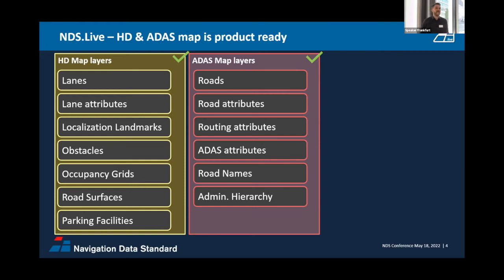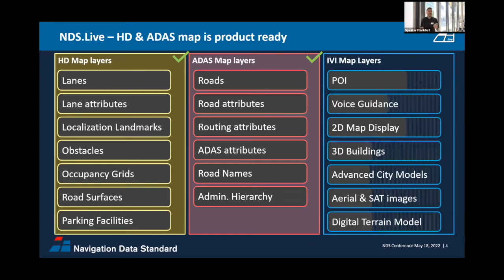We still have some open positions, namely the IVI map layers, because when we developed NDS Live we initially focused on HD map and ADAS map — those were the use cases where people needed the streaming format most. NDS Classic is still good and out on the street; you can even start a project with it right now. The IVI layers will be refactored to fit the concept of NDS Live, but probably without major refactoring. We plan to finish those IVI map layers by the end of this year.